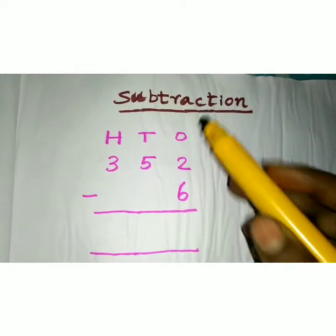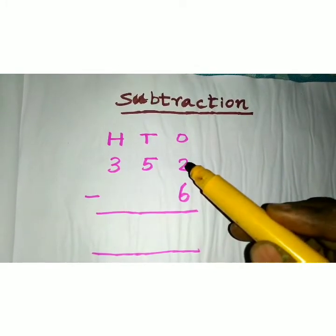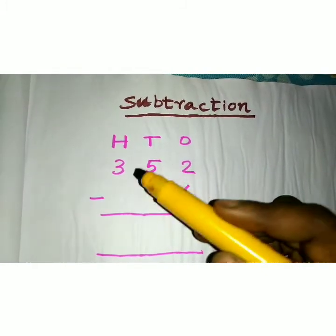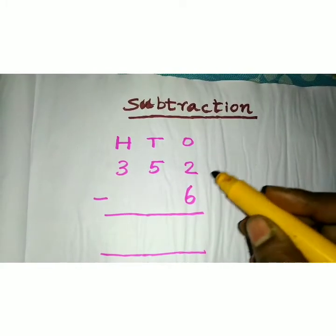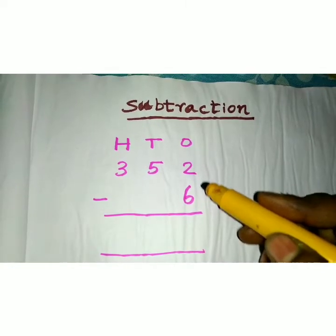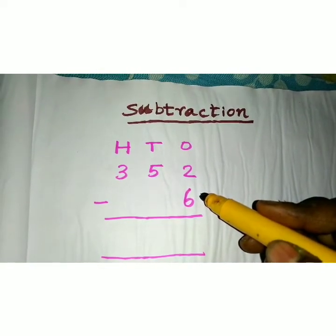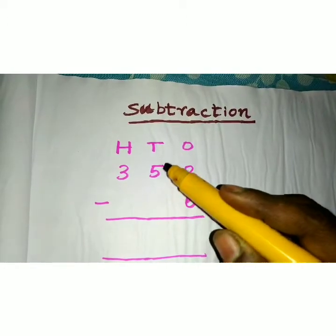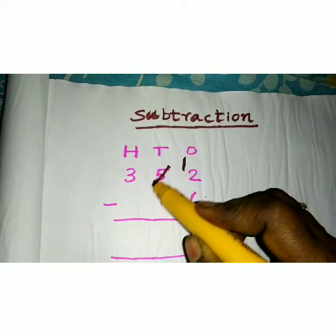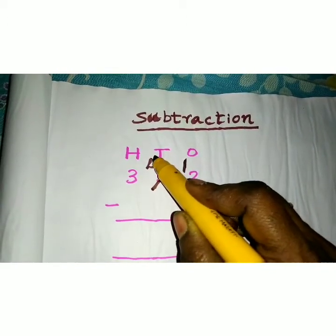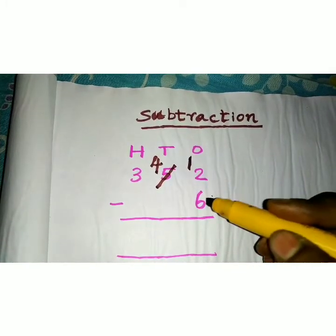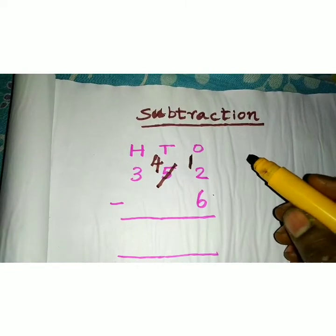Now let's start the new topic: subtraction. Consider the problem 352 minus 6. In the ones place, 2 and 6 are there. Always the upper value should be greater than the lower value. Here, 2 is smaller than 6 — that means more on the floor. So you have to increase the value at the top. You have to increase it by sharing 1 ten from the tens place. From 5 tens, if you share 1 ten, then 5 tens becomes 4 tens. In the ones place, 2 ones become 12 ones — that is 10 plus 2 equals 12 ones.